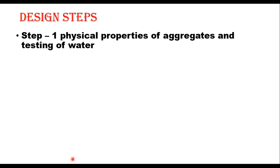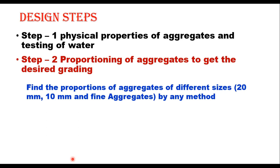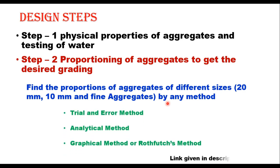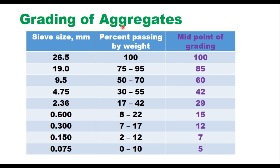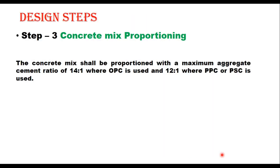Once you declare that aggregates are suitable, the second step is proportioning of aggregate to get the desired grading. Generally, the aggregates available at site are of 20 mm, 10 mm, and fine aggregate — natural sand or crushed stone dust. You proportion these aggregates by any method to get the desired grading as per IRC code. In earlier videos, three methods of proportioning were explained: trial and error method, analytical method, and graphical method. The target of proportioning should be the midpoint of the specified grading.